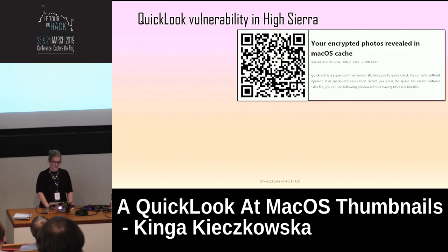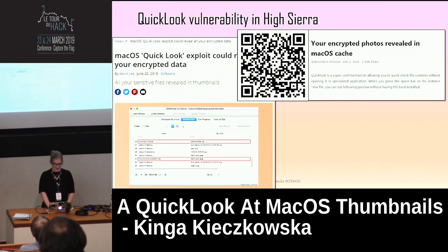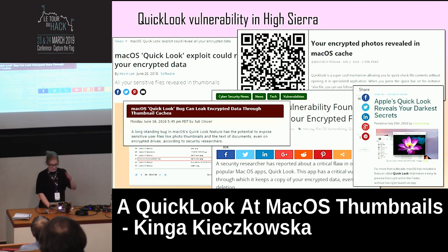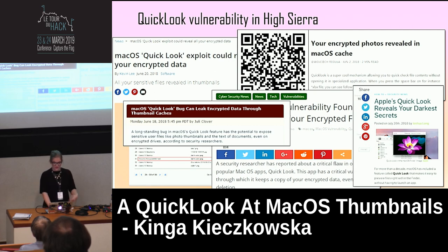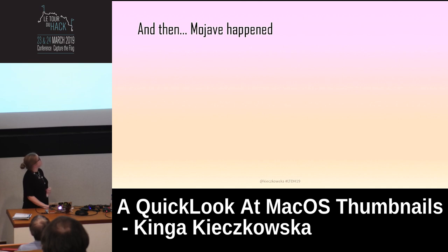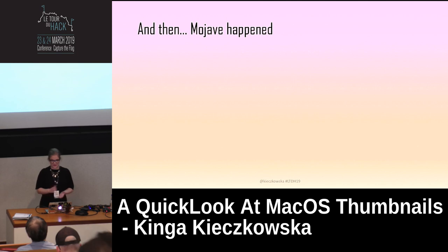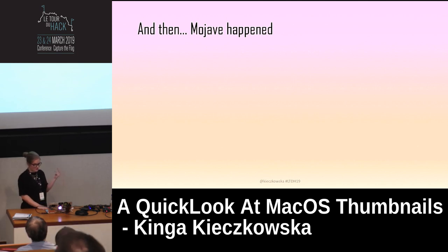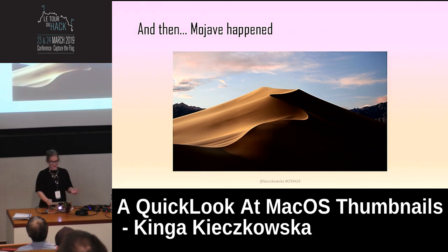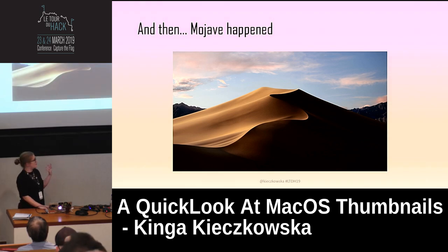A lot of people were interested in it. The guy is basically a master's student in Poland, but it got huge coverage in hacking news, Tech Radar, and security forums. There was a lot of pressure on Apple to do something and fix it in the next OS version, which was Mojave. What they did was include the thumbnail cache under System Integrity Protection, meaning you cannot do anything with that file — you can't copy it, delete it, move it, or run 'file' on it. You have no permissions.